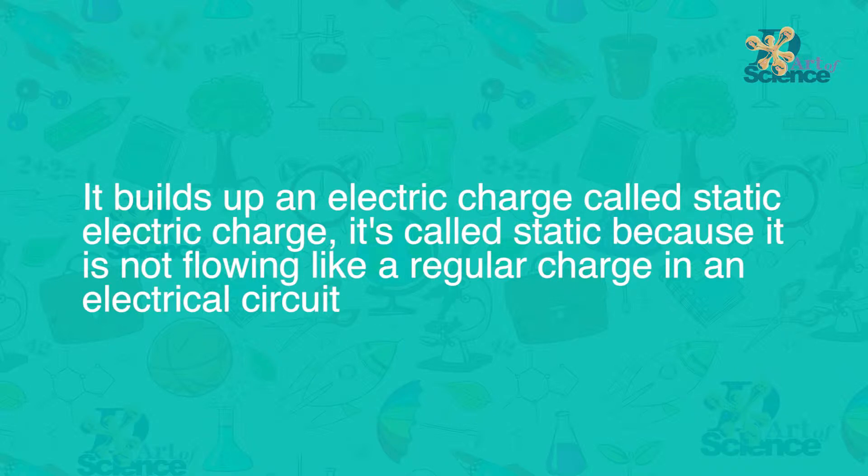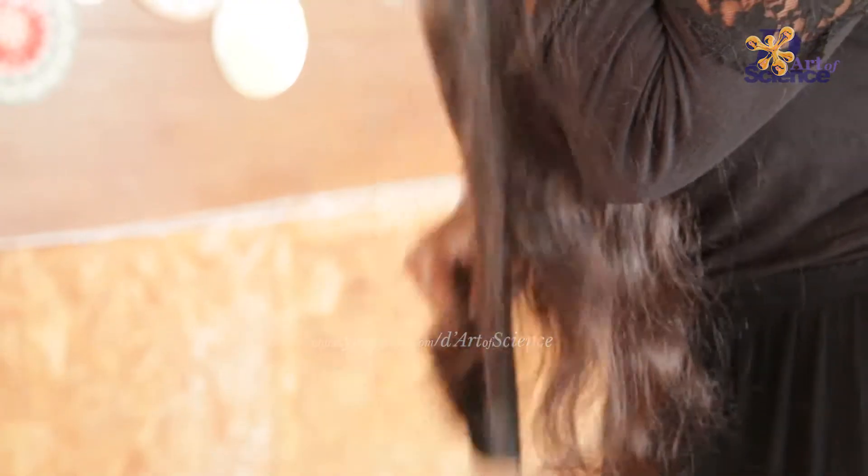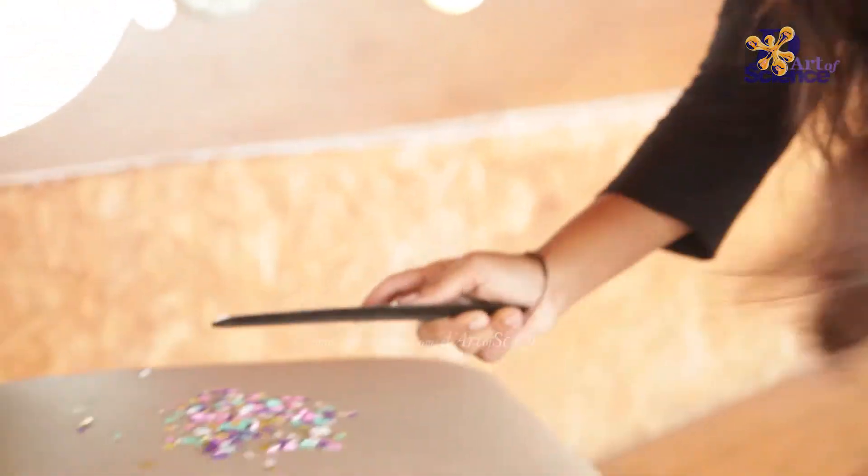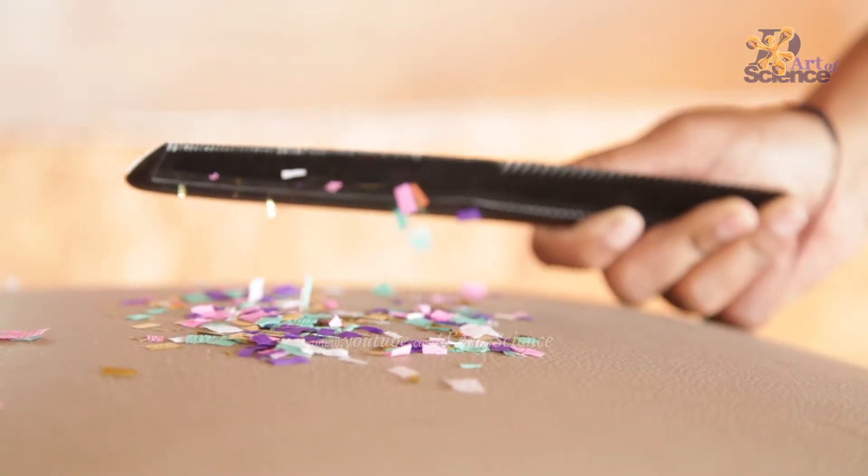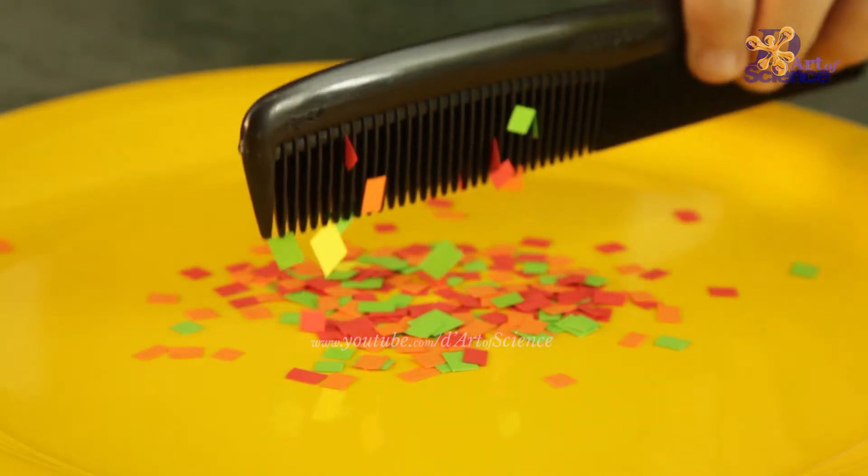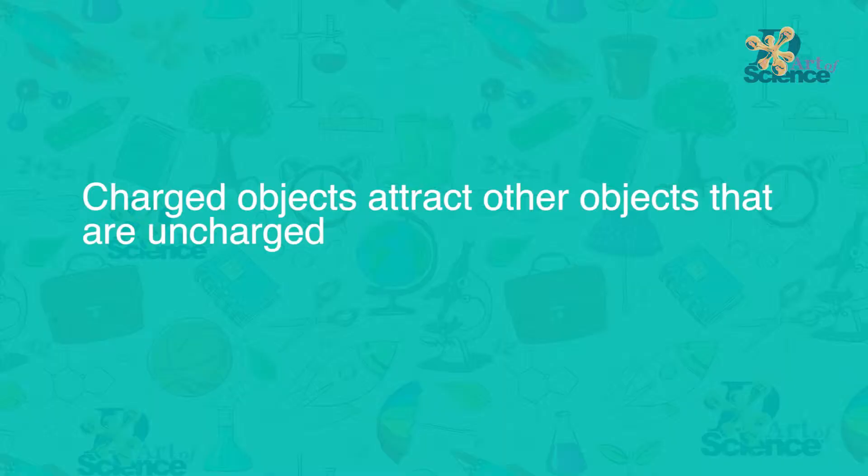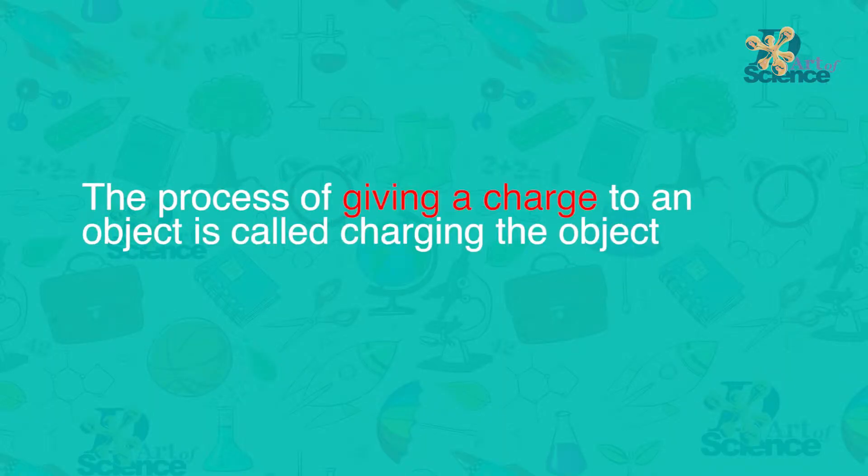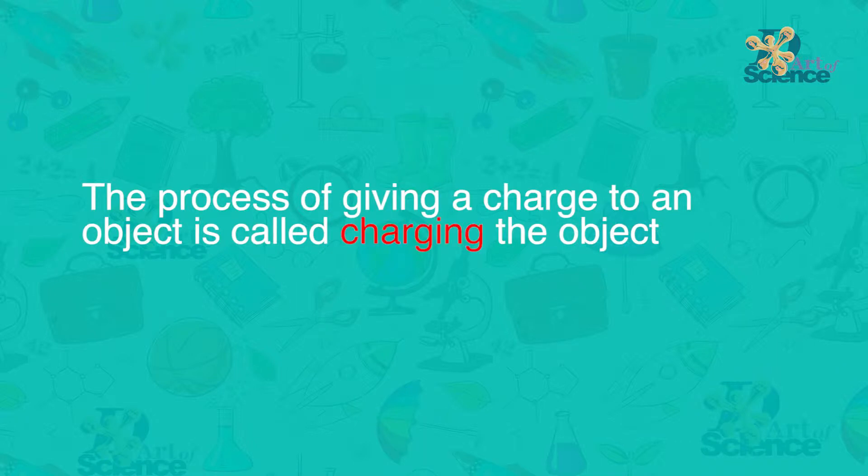It's called static because it's not flowing like a regular charge in an electrical circuit. Now the comb has become a charged object that will affect other objects. When you bring it close to small pieces of paper or tinsel which are uncharged, this electrically charged comb attracts them. So charged objects attract other objects that are uncharged. The process of giving a charge to an object is called charging an object.